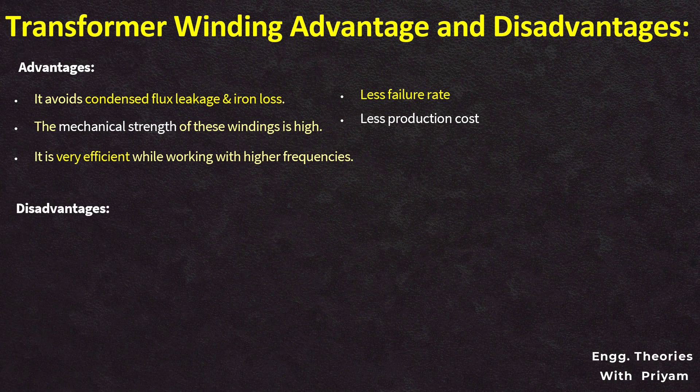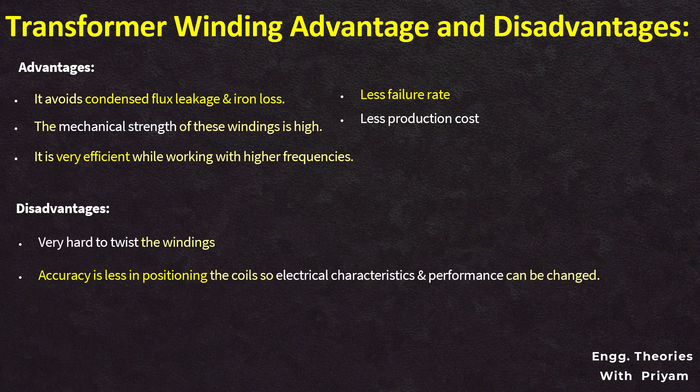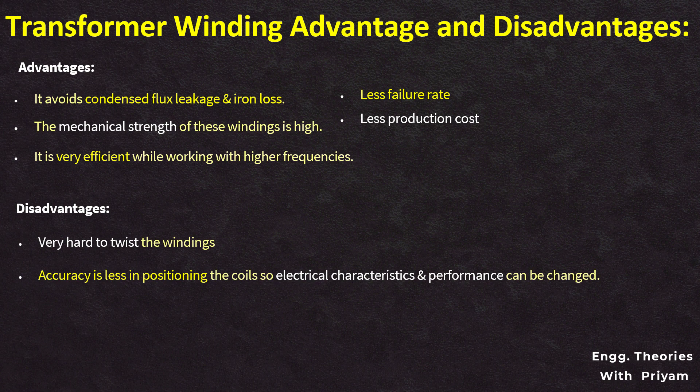Some disadvantages of transformer windings include that these windings are very hard to twist. Accuracy is less in positioning the coils, so electrical characteristics and performance can be changed. Higher expenses are incurred on manual labor.